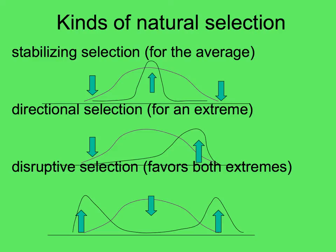Remember the three kinds of natural selection. Stabilizing selection acts on a normal distribution to select for the intermediate type, the average, so that the distribution goes from a normal curve to one sharper hump in the middle. Directional selection favors one extreme or another. And disruptive selection, in which both extremes are favored.